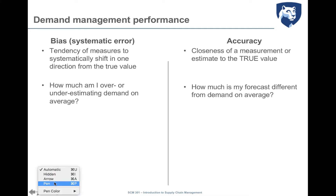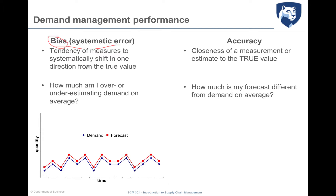On one side, we have what is called bias or systematic error. The bias is a measurement of the existence of a systematic trend in being wrong in demand management. In the context of forecasting, bias means verifying if my demand management activities are systematically overestimating or underestimating the demand — I'm interested in understanding if there is a trend in this difference.